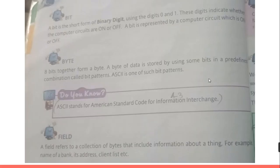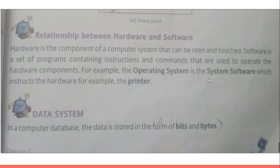Without software the hardware could not work, and without hardware the software could not work — a computer is a combination of hardware and software. We need hardware components as well as software installed on them. For example, if we have a computer system we must install an operating system such as Windows 10 or Windows 7, and that operating system basically gives commands to the hardware.